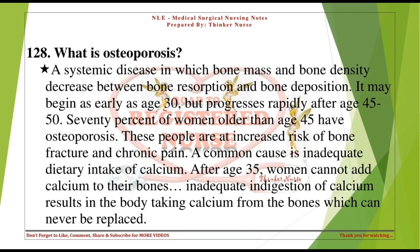What is osteoporosis? A systemic disease in which bone mass and bone density decrease due to an imbalance between bone resorption and bone deposition. It may begin as early as age 30 but progresses rapidly after age 45 to 50. 70% of women older than age 45 have osteoporosis. These people are at increased risk of bone fracture and chronic pain. After age 35, women cannot add calcium to their bones, and inadequate calcium intake results in the body taking calcium from the bones, which can never be replaced.